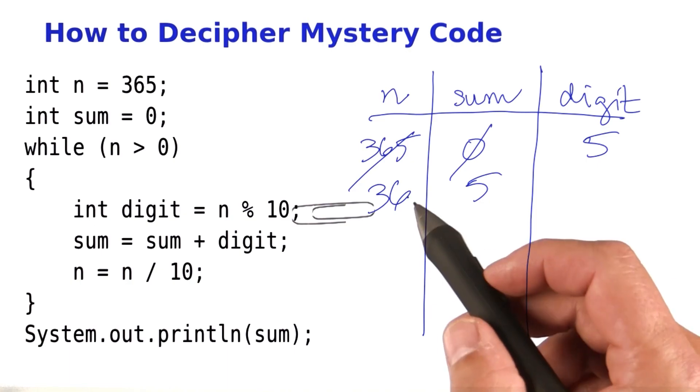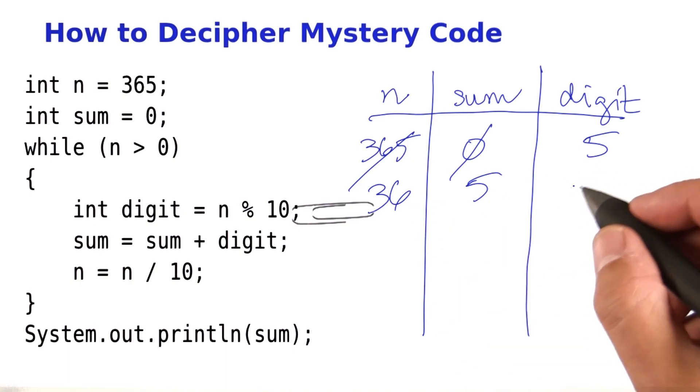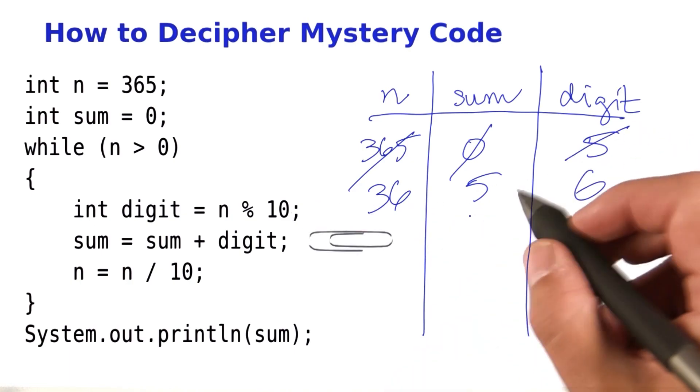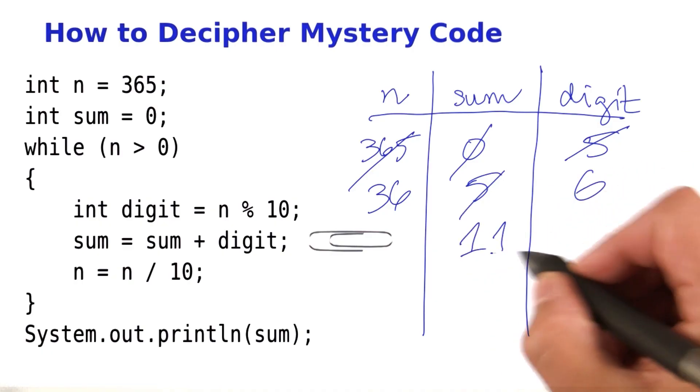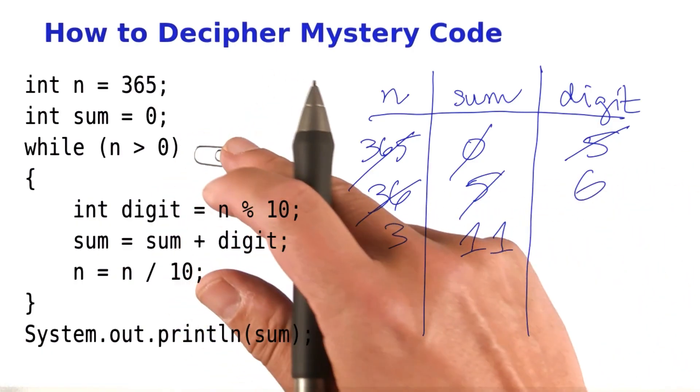Compute n mod 10. 36 mod 10 is 6. Store that in the digit. Sum is sum plus digit. It is 11. N is n mod 10. Now n is 3. Back to the top of the loop.